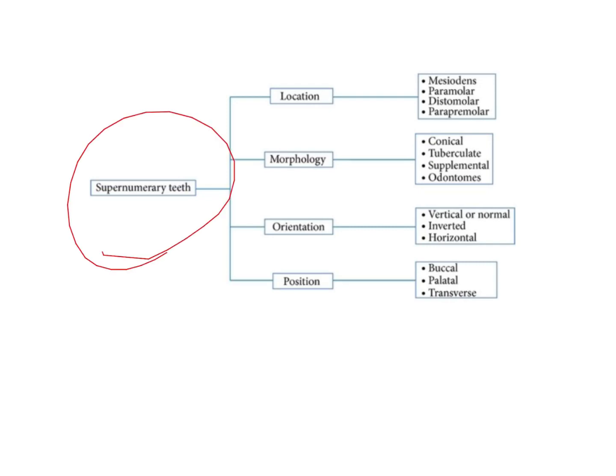Based on location, you have your mesiodens. Paramolar is right next to a molar. Distomolar is behind the third molars. Parapremolar is next to your premolars.